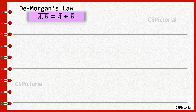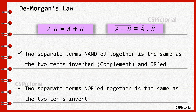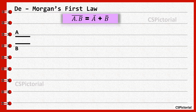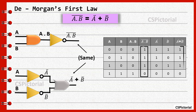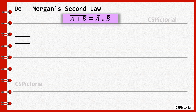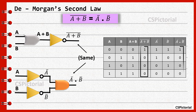De Morgan's law. A dot B bar is equal to A-bar plus B-bar. A plus B bar is equal to A-bar dot B-bar. De Morgan's first law states that two separate terms NANDed together is the same as the two terms inverted and then ORed. This is proved using the truth table: the complement of A dot B is the same as complement of A plus complement of B. De Morgan's second law states that two separate terms NORed together is the same as the two terms inverted and then ANDed. The complement of A plus B is the same as complement of A dot complement of B. This can also be proved using the truth table.